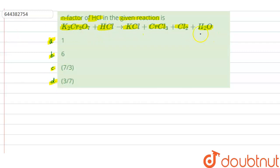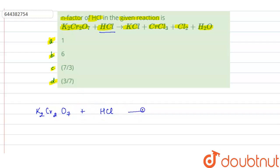So in this question, a reaction is given. We have to find out the N factor of HCl. First of all, we will balance this equation, then we will find out the number of electrons involved in this reaction — the number of electrons which 1 mole of HCl will lose.